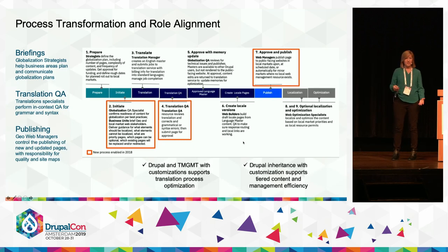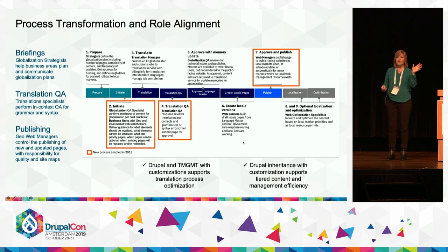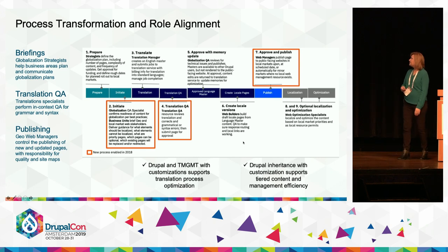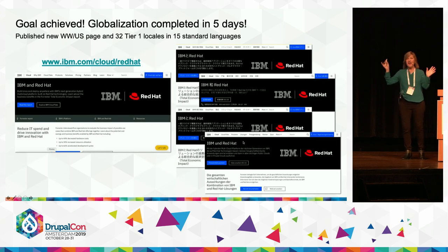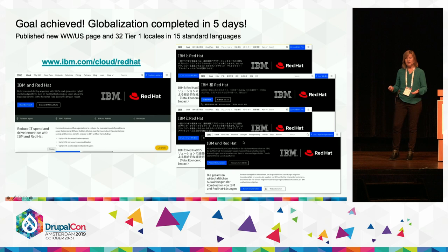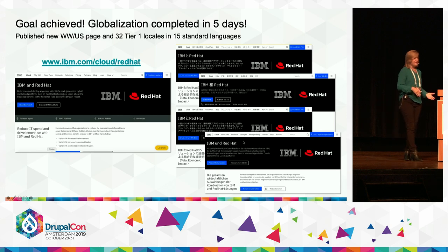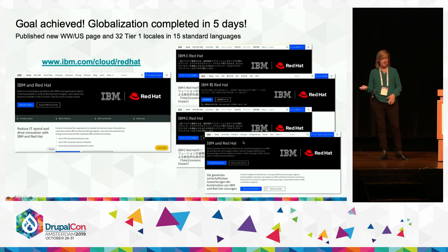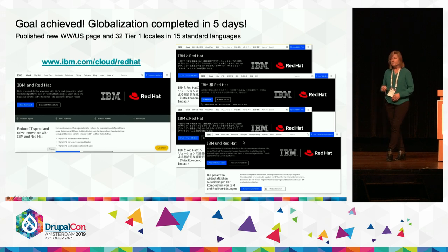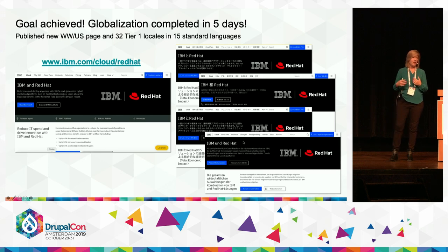We don't have to have a web manager assigned for all 137 locales — we have about 42 web managers. And as a success result: through our process, we just recently were able to complete globalization in five days for our Red Hat announcement. Think about 12 weeks down to five days. I know we can do this even faster — there were a few reasons we didn't make it faster that we're working on now. The goal is to actually be able to queue everything up so we can launch on a single day in all markets. We have the capability to do that; we just haven't tested it yet.